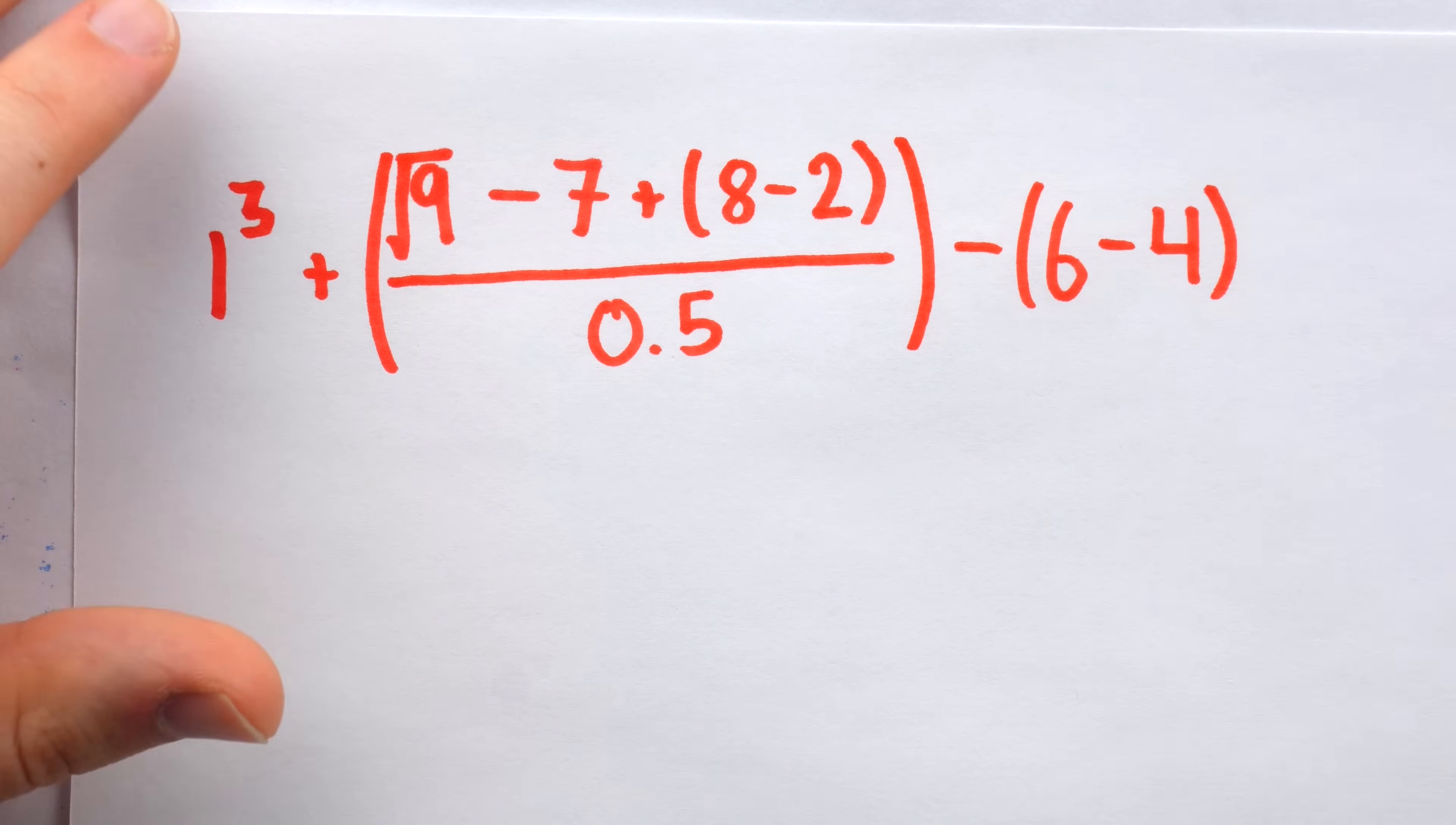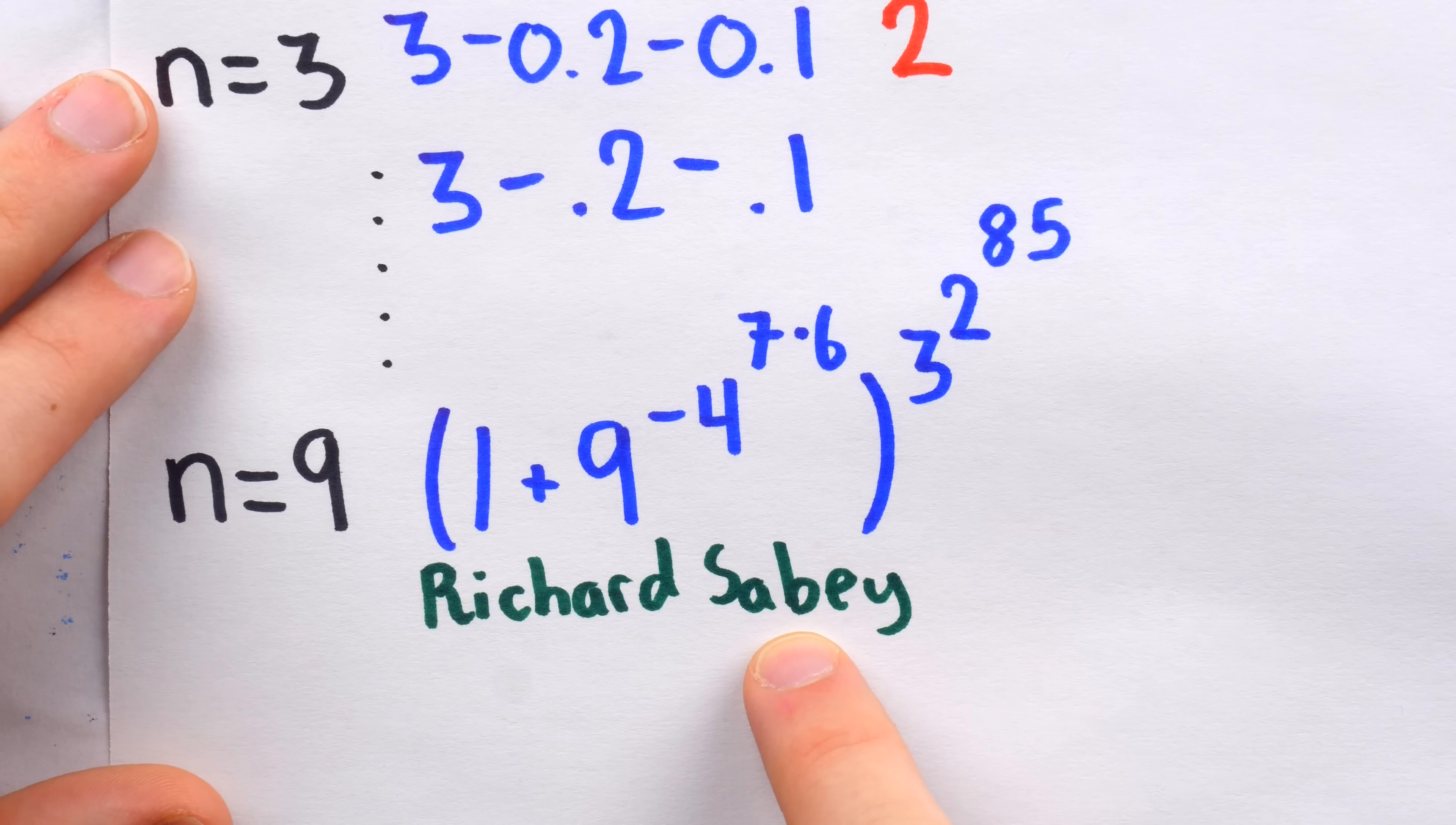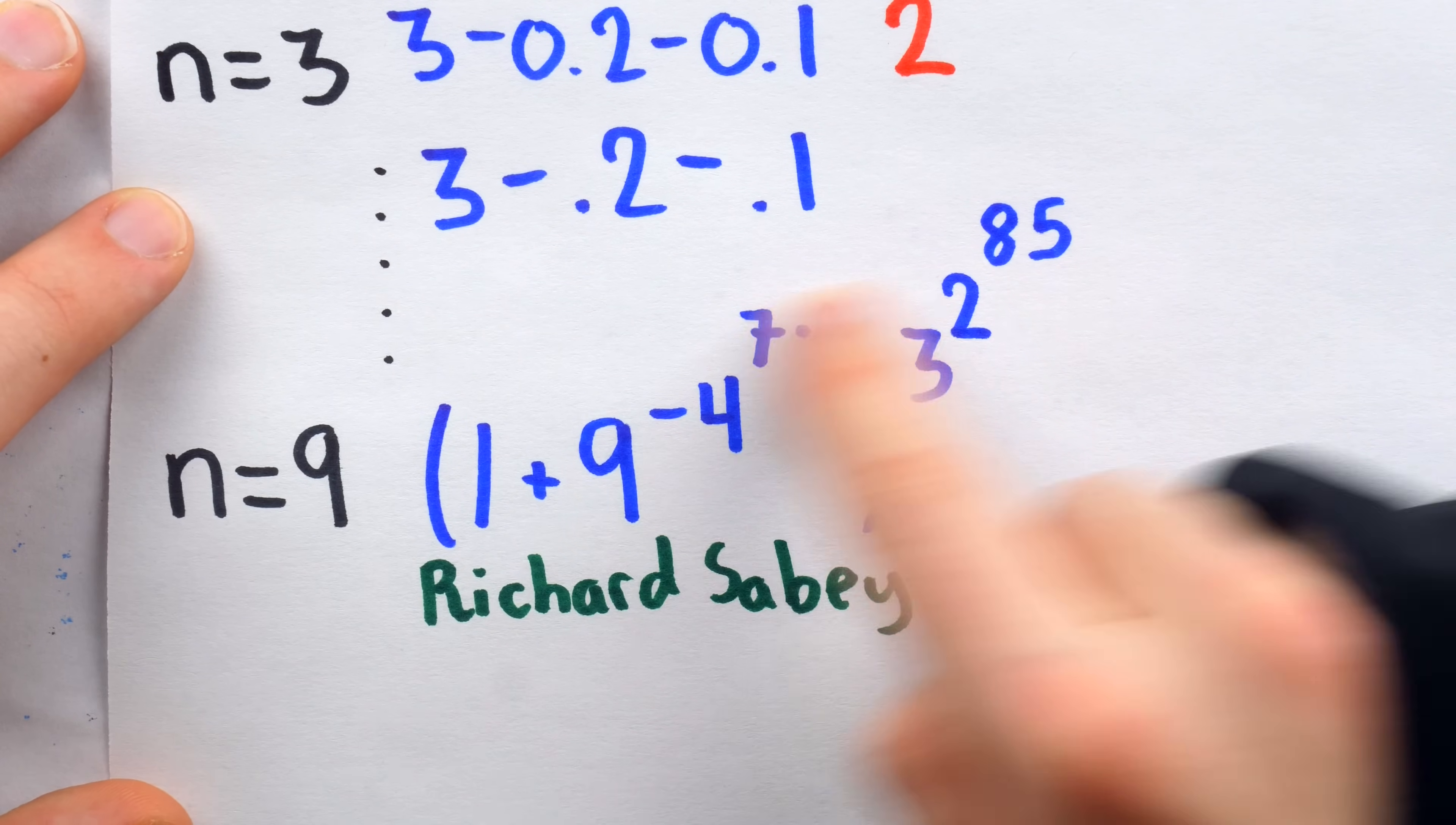But how could we use the digits 1 through 9 to approximate e? Well, in response to Eric Friedman's challenge, a fella named Richard Saby came in with an incredible pan-digital approximation. Richard Saby said, Hey, check this out. 1 plus 9 to the negative 4 to the 7 times 6, all to the power of 3 to the power of 2 to the power of 85.